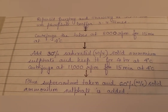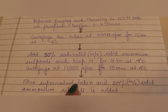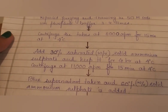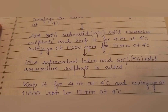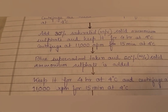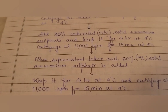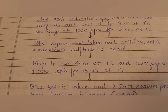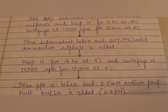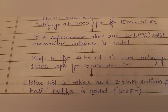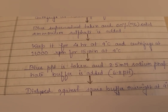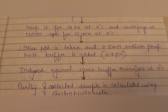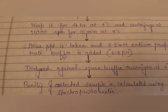A blue supernatant is obtained, to which 60% solid ammonium sulfate is added. It is kept for 4 hours at 4°C and then centrifuged at 11,000 RPM for 15 minutes at 4°C. The resulting blue precipitate is collected and 2.5 millimolar sodium phosphate buffer is added at pH 6.8. It is then dialyzed against the same buffer overnight at 4°C.